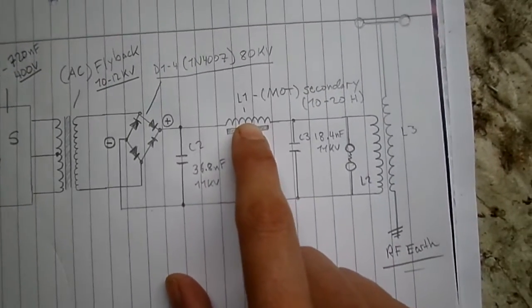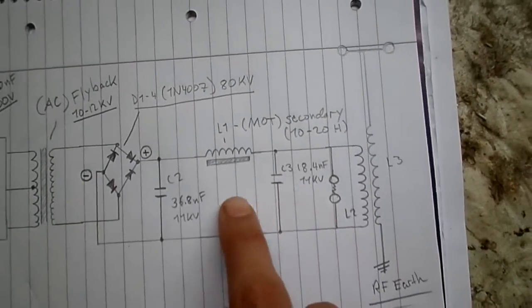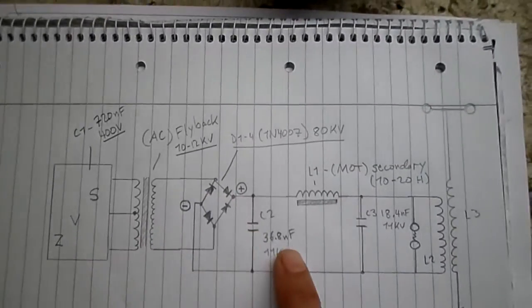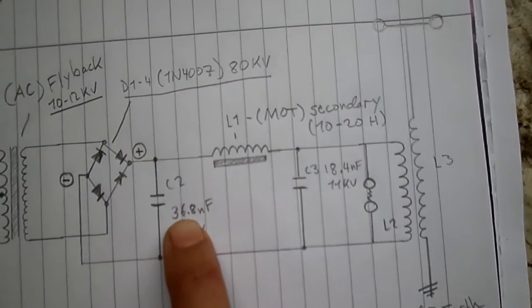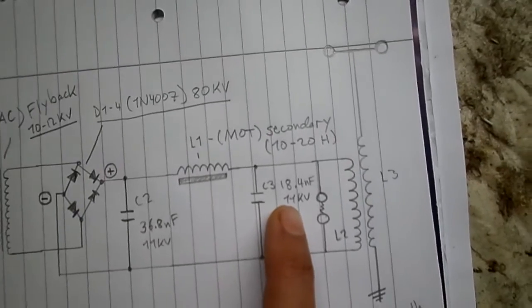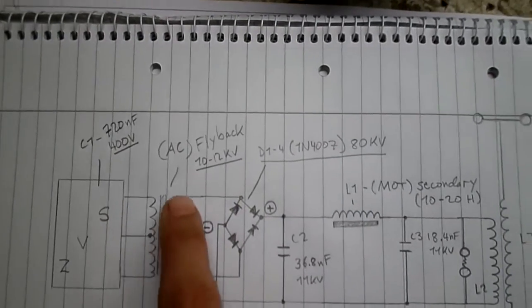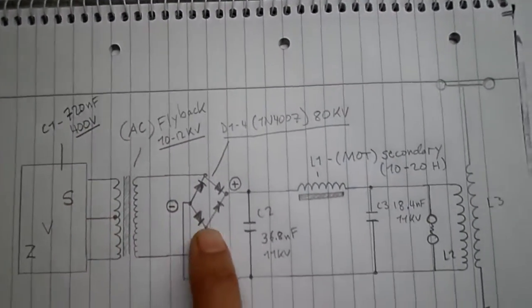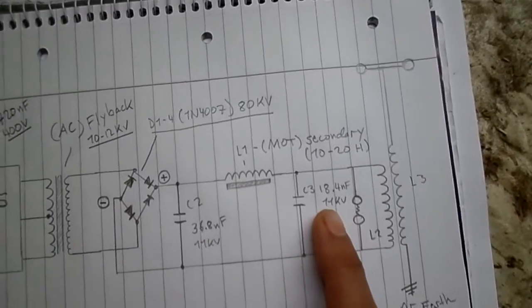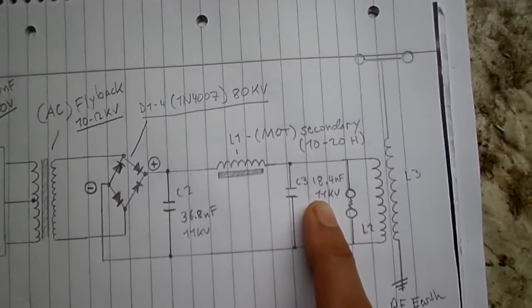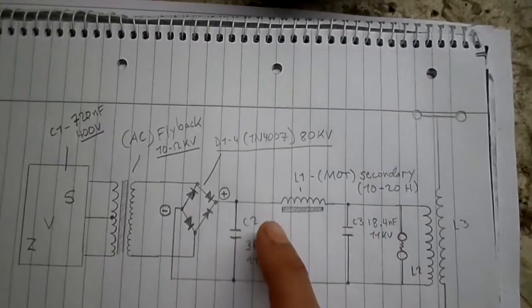So you've got your charging choke, you have your tank capacitor. In my case it was 18.4 nF at 11 kV. So if this was an NST, my typical value for the tank capacitor would be about 36.8 nF. In this case it's halved. It all kind of varies. It's a bit tricky to know what kind of frequency this is running at. It's a bit of a game. I just happened to get lucky. It could probably be better, but it's working pretty damn good for what it is right now.